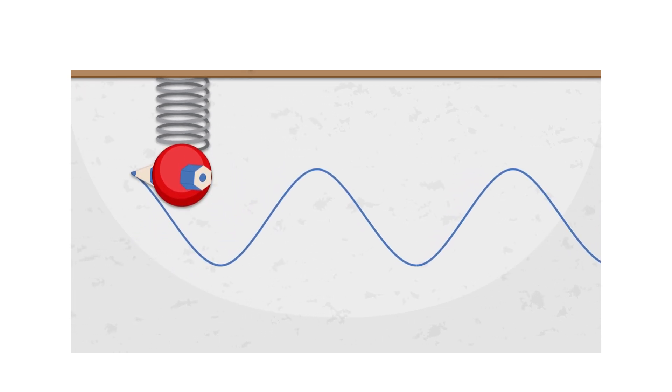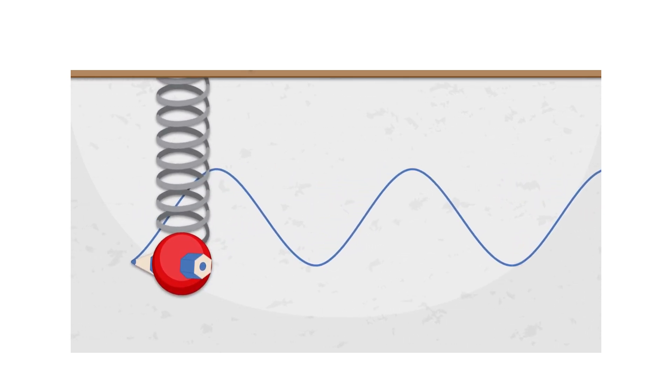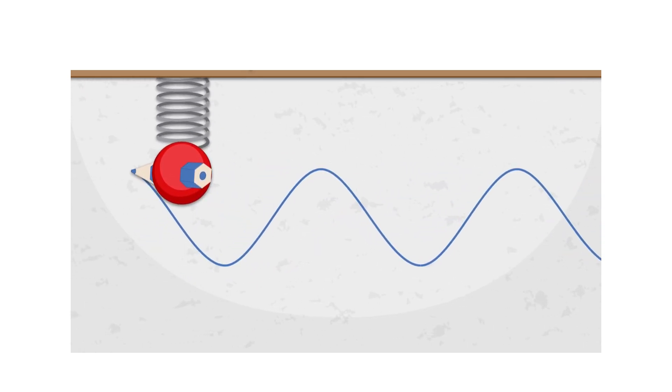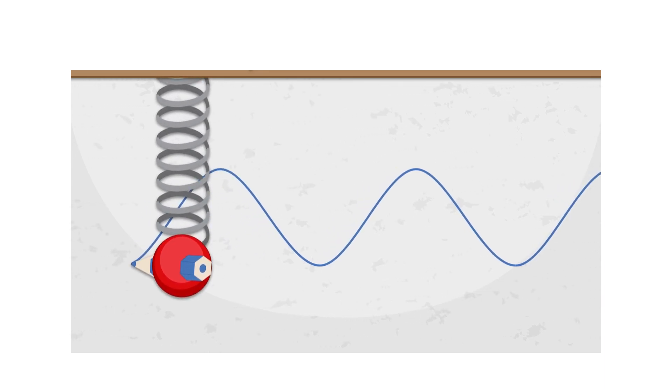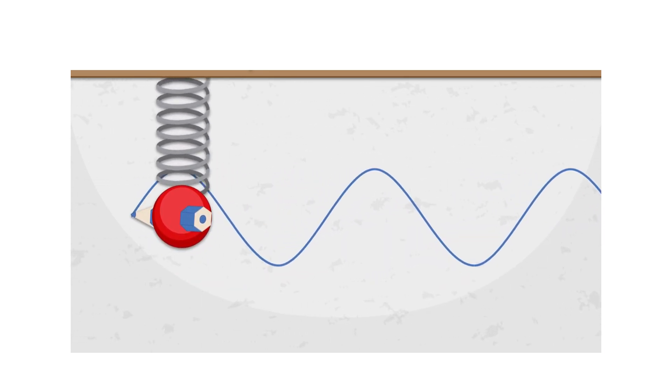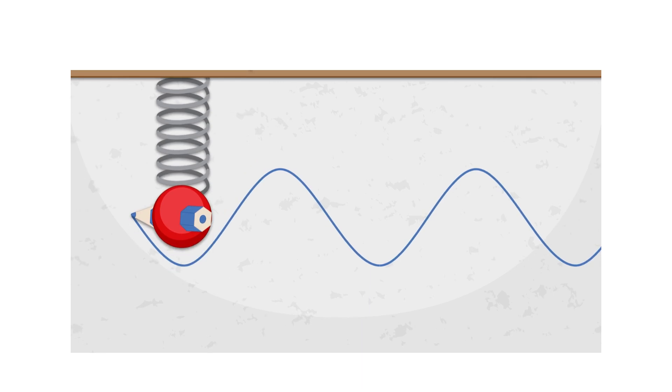Soon after the particle changes its direction, it builds up speed, reaches a maximum speed at zero displacement, and starts to slow down until it reaches zero speed again at the other end. Likewise,